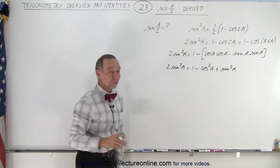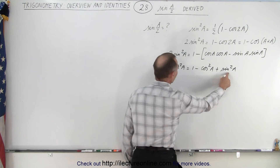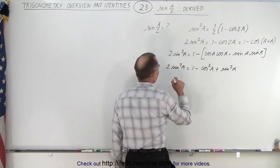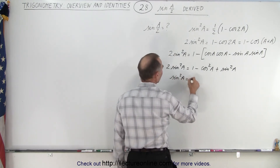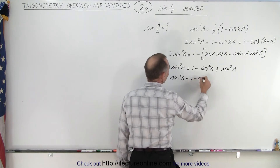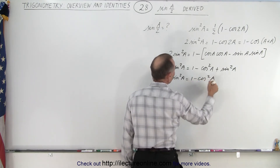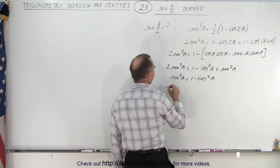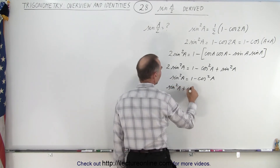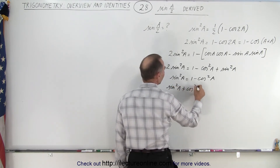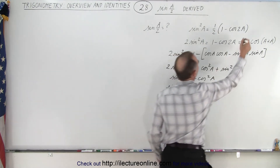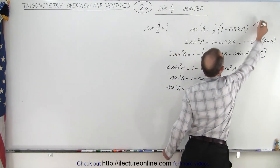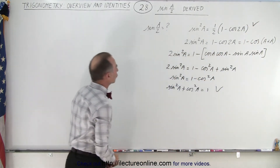Then we can subtract the sine squared of A from both sides, bringing it to the other side, so this becomes the sine squared of A equals one minus the cosine squared of A. Now if we bring the cosine over, we can write that the sine squared of A plus the cosine squared of A is equal to one, and we know that to be true, so therefore this identity is true.